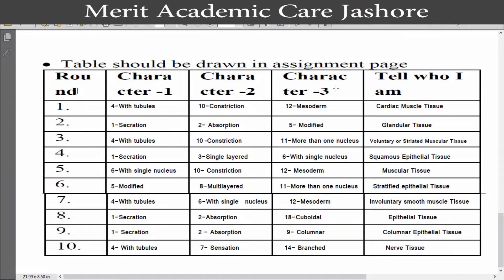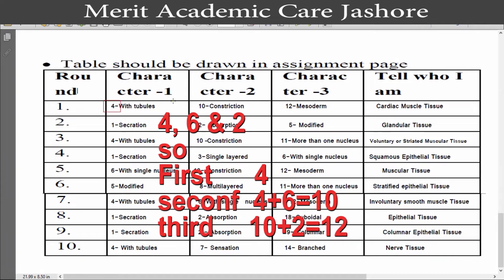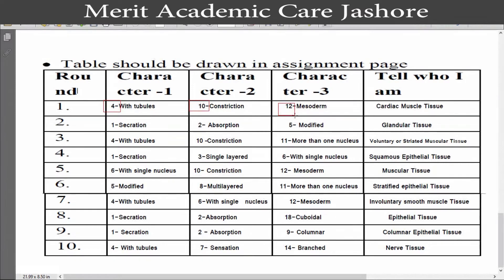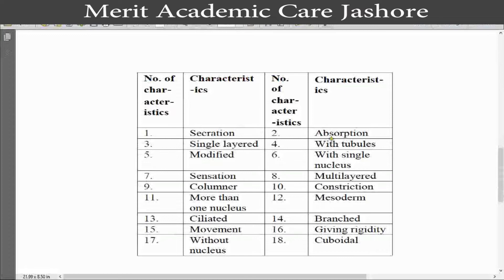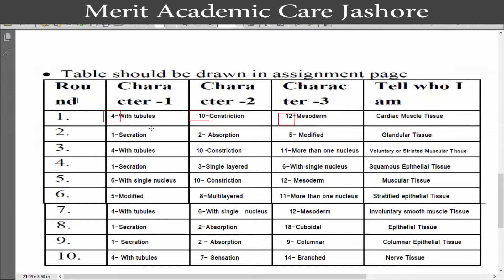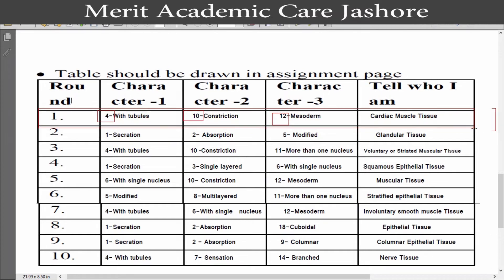If you write it in your own way then that will be better. I just show you how to fill up the table. If you read the instruction, it explains details about the game. In the first round, suppose we get three numbers. Our first number is 4, second number is 6. 4 plus 6 equals 10, and the third number is 2. 10 plus 2 equals 12. So our first number is 4, and the 4th number feature in the table is 'with troubles'. So we write in the first box '4 with troubles'. With troubles it must be written. So in the first round we fill up the box with: with troubles, constriction, mesoderm, and finally these three features are for the cardiac muscle tissue.